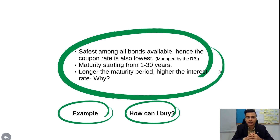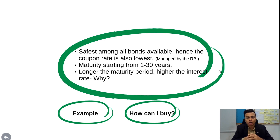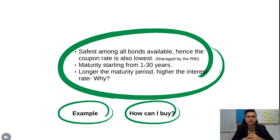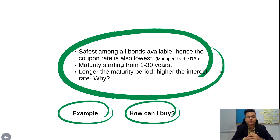Longer the maturity period, higher the interest rate. This is because over longer periods — like 10 or 15 years — the probability of interest rate fluctuation is much higher. Rates may go up or down significantly. Because of that fluctuation risk, higher maturity bonds carry a higher coupon rate.